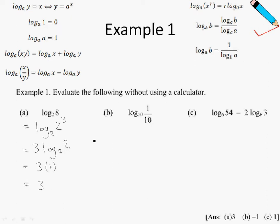Example 1b, log base 10 of 1 over 10. 1 over 10 can be written as 10 to the power of negative 1. And then from here, I will apply law number 6. So I can further write this as negative 1 log 10 of 10. And similar to the previous example, log 10 of 10 is just 1, and final answer is negative 1.